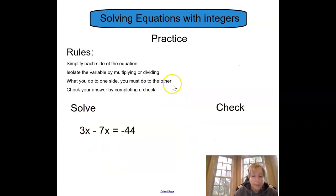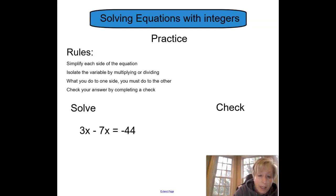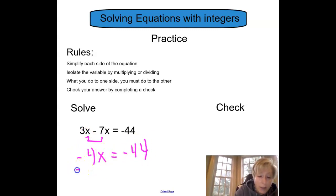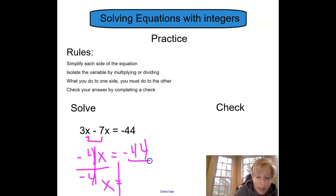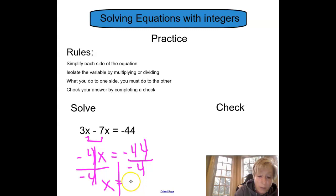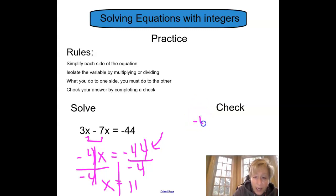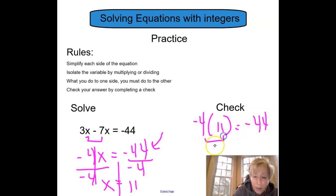Last problem for you to try — looks like you have to simplify first. When I combine my like terms, 3x minus 7x is negative 4x, which equals negative 44. It's a multiplication problem, so I'm going to divide to solve. I divide by negative 4 — that isolates my x. That means I divide by negative 4 on the right. A negative divided by a negative is a positive. Negative 44 divided by 4 gives me positive 11. When I do my check, I'll use the simplified equation: negative 4 times 11 should equal negative 44. Negative 44 equals negative 44. Perfect.